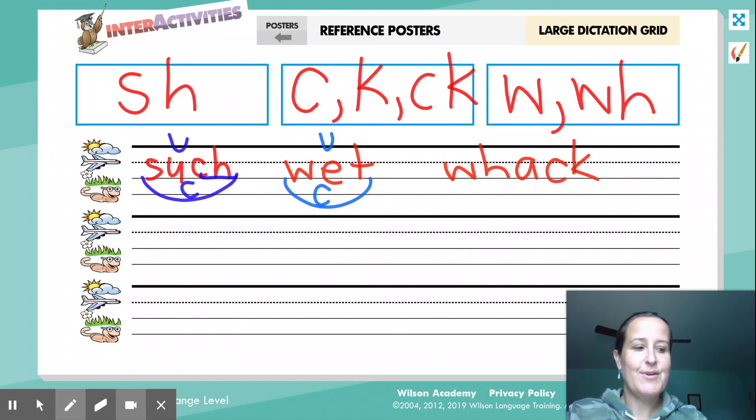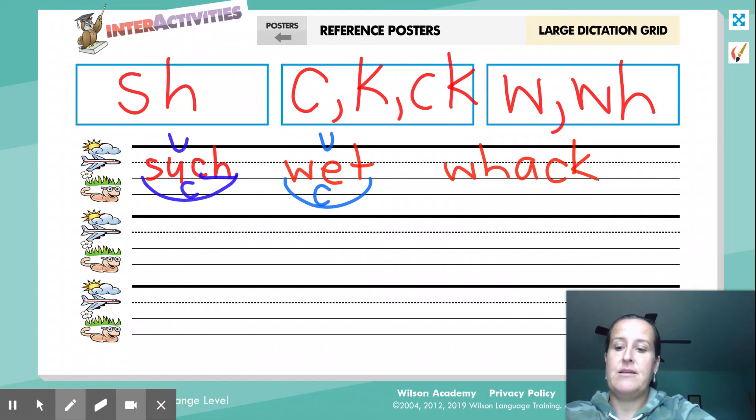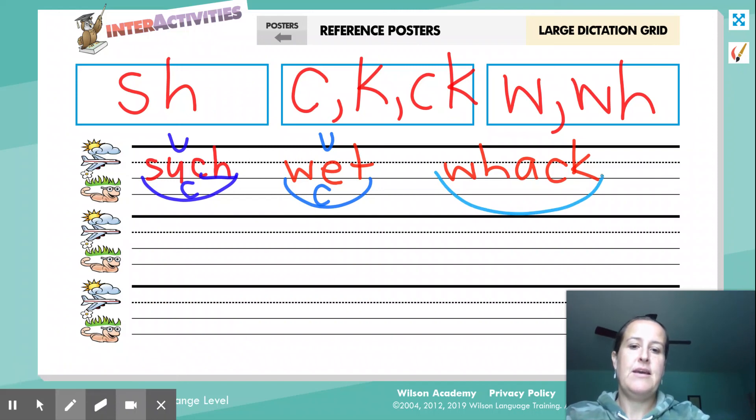All right, now what we're going to do is we're going to mark up that word whack. So what are we going to do first? First, yes, scoop it. And the A is closed in by the ck, so we're going to put the closed syllable underneath. And it is a ck at the end of that word because it's following a short vowel. So we're going to put a breve on top of that A, and we're going to underline the wh too, because it is a digraph. Okay, wh, whistle, yes.